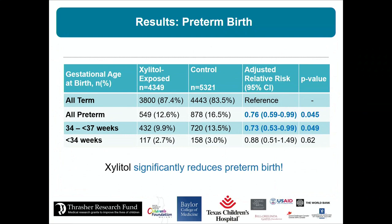This is the key result: xylitol use in pregnancy led to a significant 24% reduction in preterm birth, which was most significant in the late preterm group — 34 to less than 37 weeks. For those doing global health research, gestational age is notoriously difficult to establish in low-resource settings where ultrasound isn't always available.